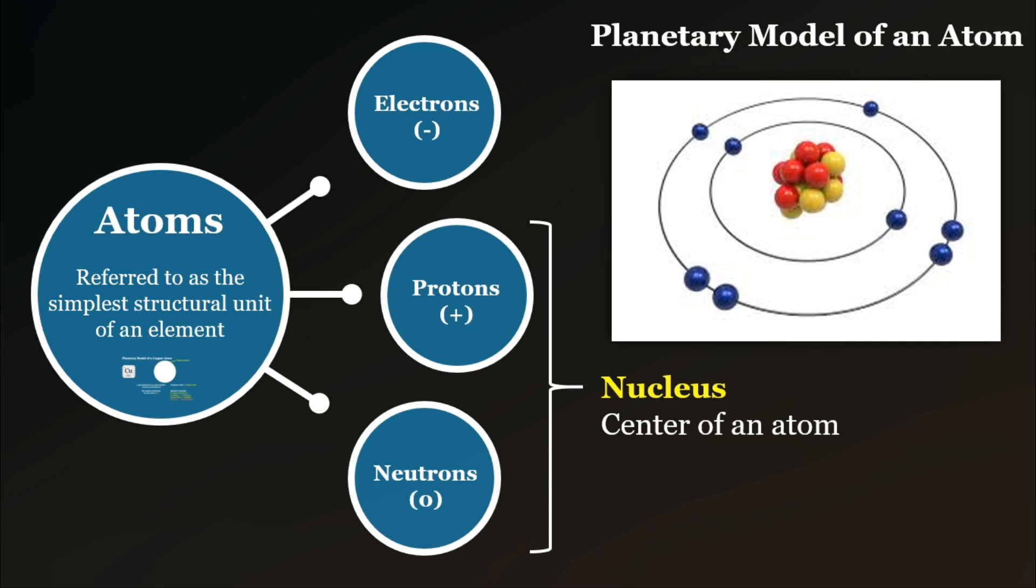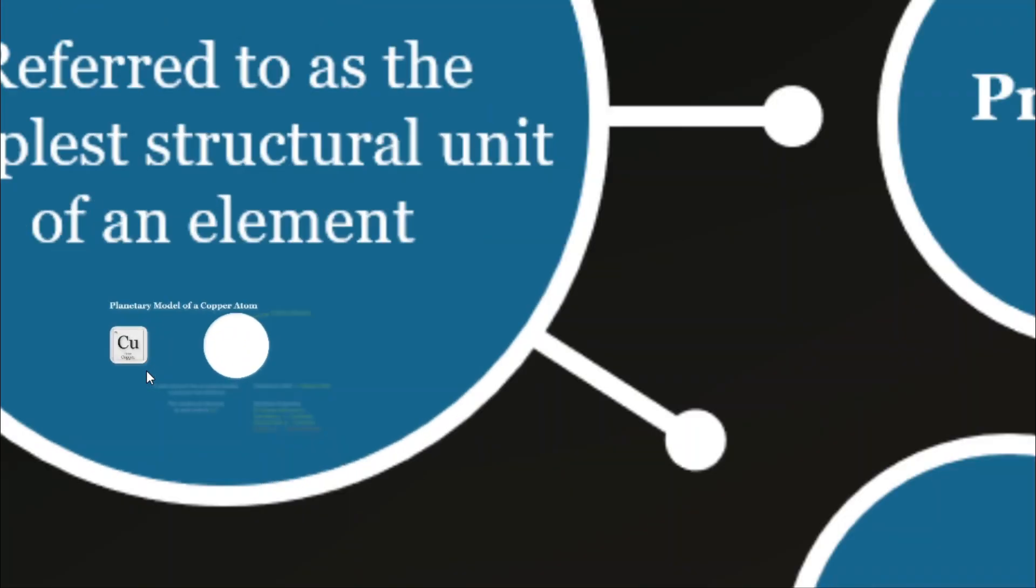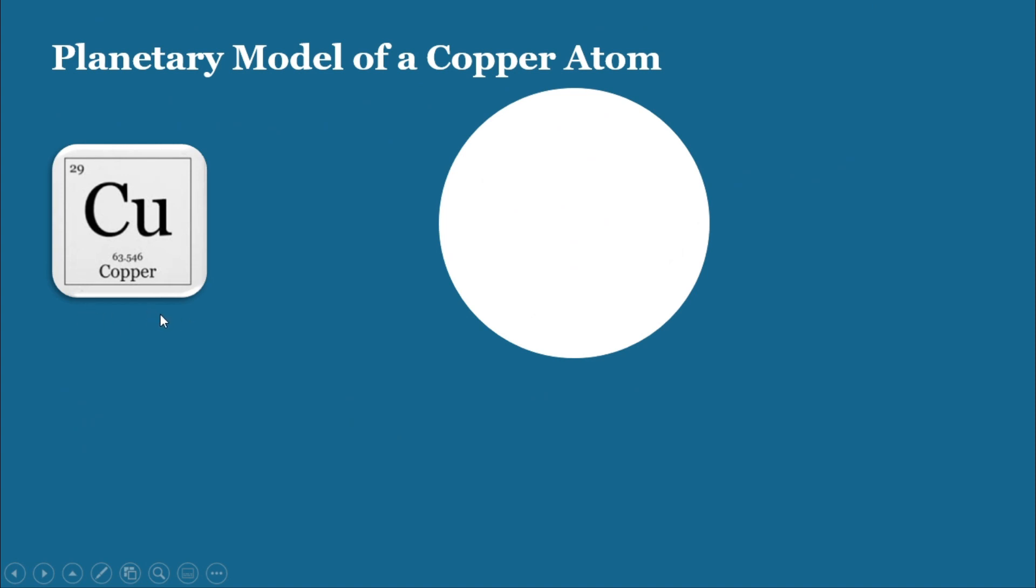Now, let us go back to why we are studying electron theory. Shown here is a tile of a copper atom found on the periodic table. Its atomic number is 29. This means that it has 29 protons in its nucleus. It is important to remember that for a pure element, it has an equal number of protons and electrons. This means that there are also 29 electrons traveling around the nucleus.